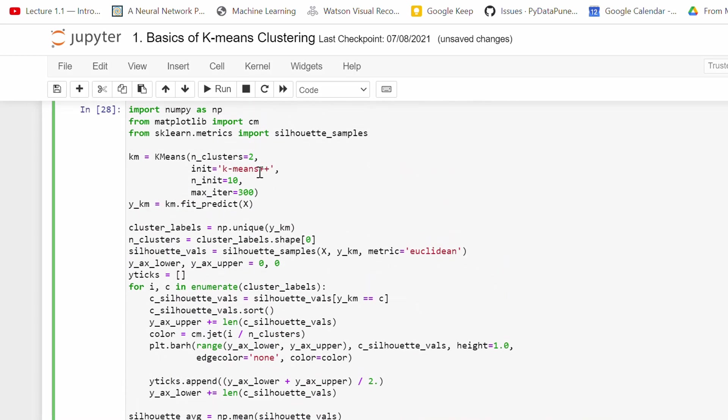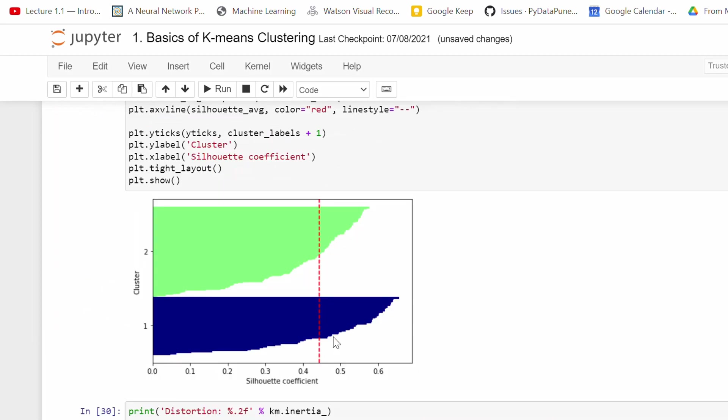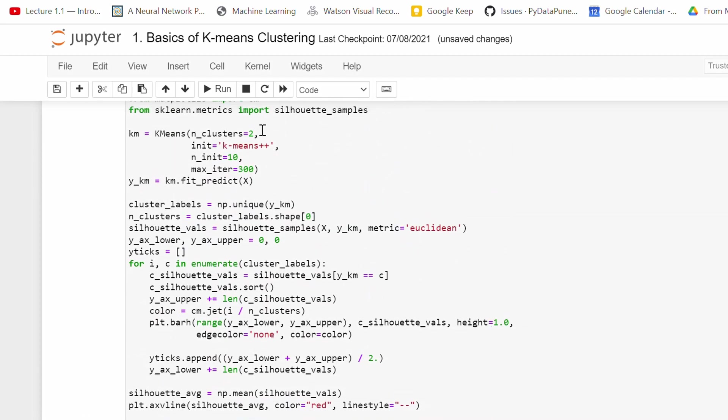So I need to change. Let's see for two and run again. Again you see, it is better than four, but blobs are not identical. The width here and the width here is not the same.